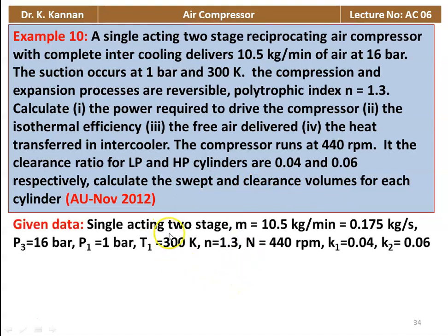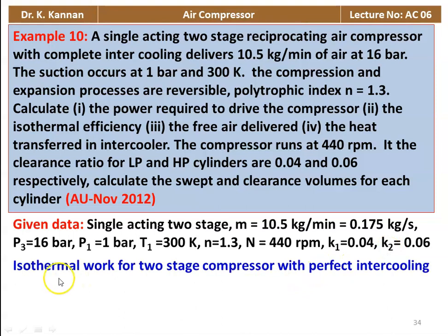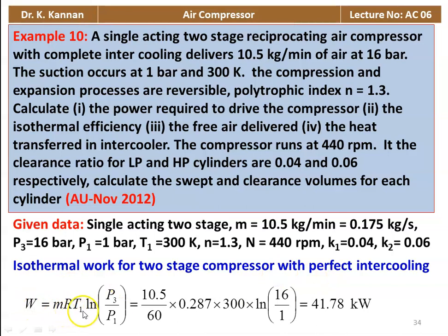Given data: single-acting two-stage compressor, mass equal to 10.5 kg/min which is 0.175 kg/s, delivery pressure P3 equal to 16 bar, suction pressure 1 bar, T1 equal to 300 Kelvin, n equal to 1.3, speed 440 rpm, K1 equal to 0.04, K2 equal to 0.06. Isothermal work: W equal to M·R·T1 into ln(P3 by P1). So 10.5 by 60 into 0.287 into 300 into ln(16 by 1) equals 41.78 kilowatts.